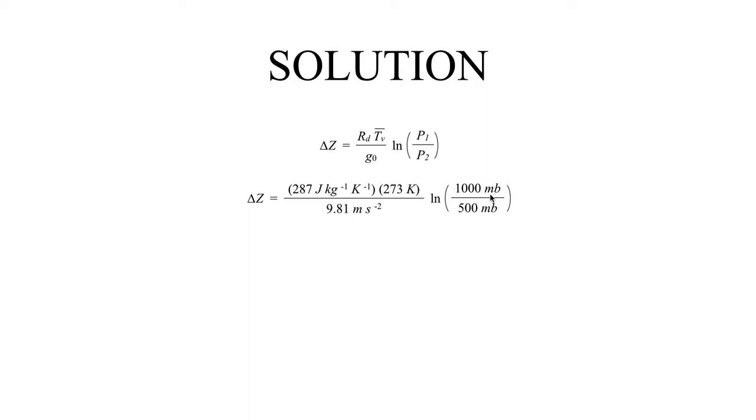On some future problems when you use the hypsometric equation, this might be a bigger deal to worry about. But in this case, not so much. We simply plug in our pressure levels: a thousand millibars divided by 500 millibars, and that simplifies down to the natural log of two. When we plug that into a calculator, we get a thickness that's roughly 5,500 meters.